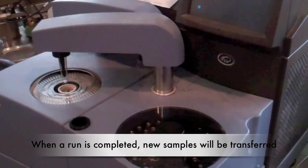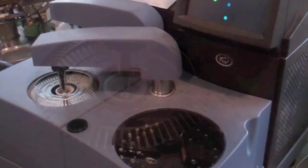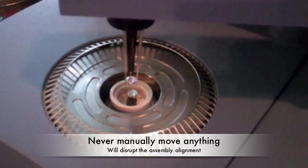Once the run is complete, the machine will remove the previous sample and replace with the next run sample. Never manually move the sample cover or the auto-sampler arm because this will disrupt the assembly alignment.